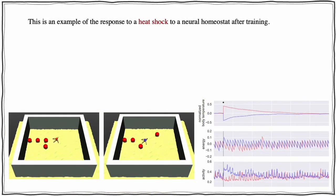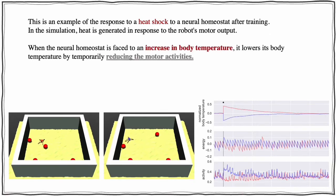This is an example of the response to a heat shock to a neural homeostat after training. In the simulation, heat is generated in response to the robot's motor output. When the neural homeostat is faced to an increase in body temperature, it lowers its body temperature by temporarily reducing the motor activities.